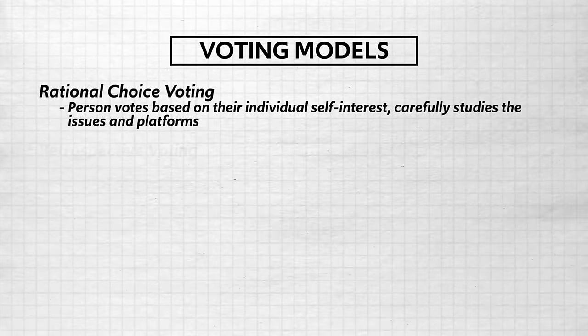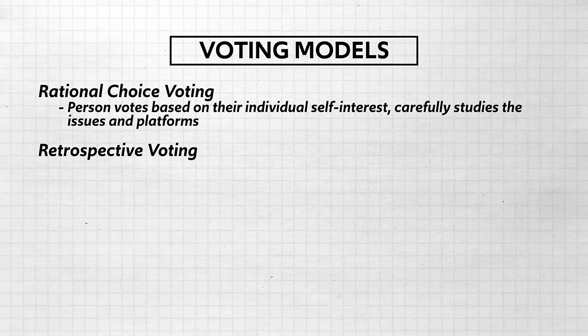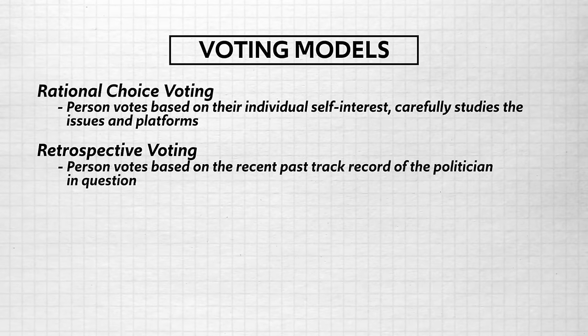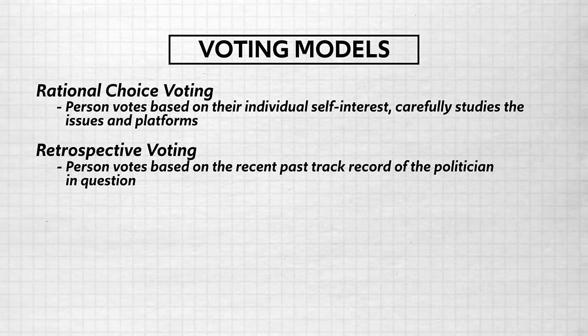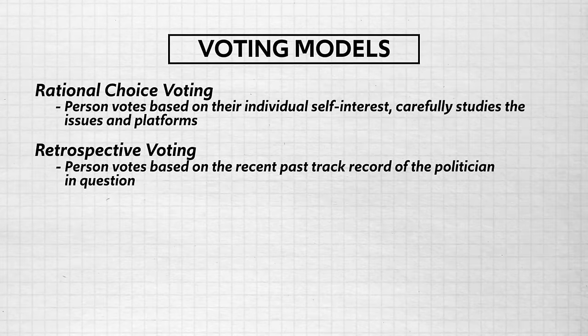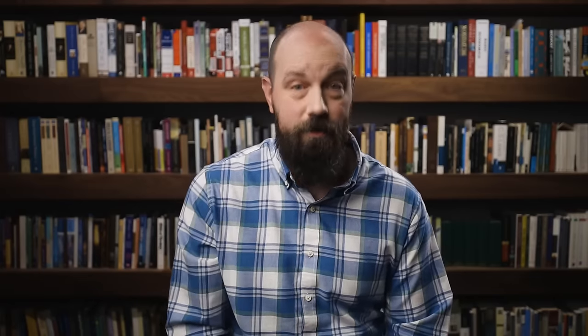The second model for voting behavior is retrospective voting. This is when a person votes based on the recent past track record of the politician in question. And they ask themselves a very simple question: was this politician a turd or not? And if, in recent memory, the politician has not been a turd, then the retrospective voter votes that person back into office.